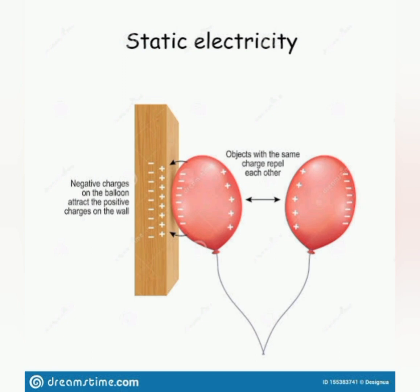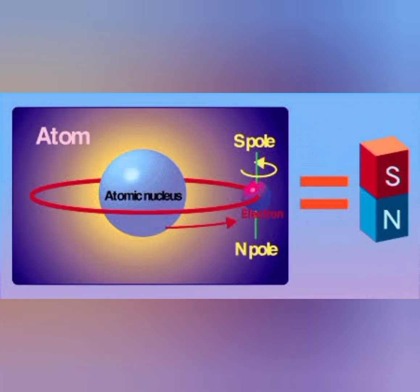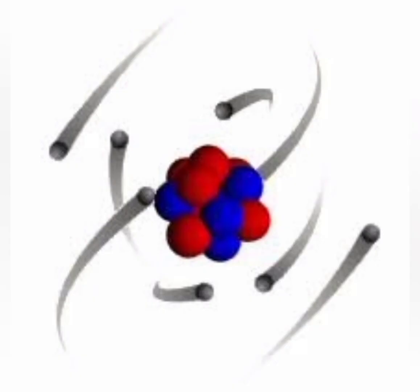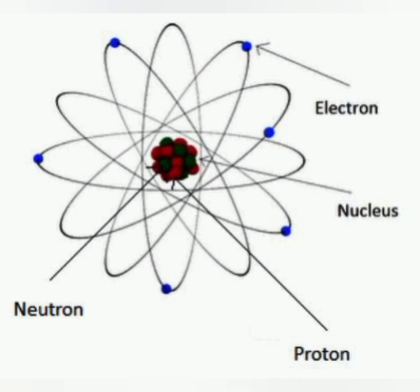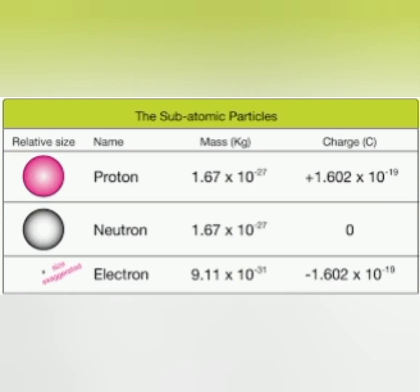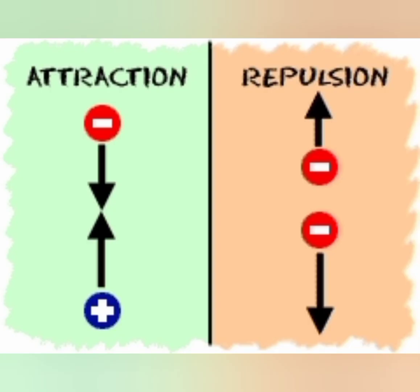Before understanding static electricity, we first need to understand the basics of atoms. All physical objects are made up of atoms. Inside an atom are protons, electrons, and neutrons. The protons are positively charged, the electrons are negatively charged, and the neutrons are neutral. Therefore, all things are made up of charges.